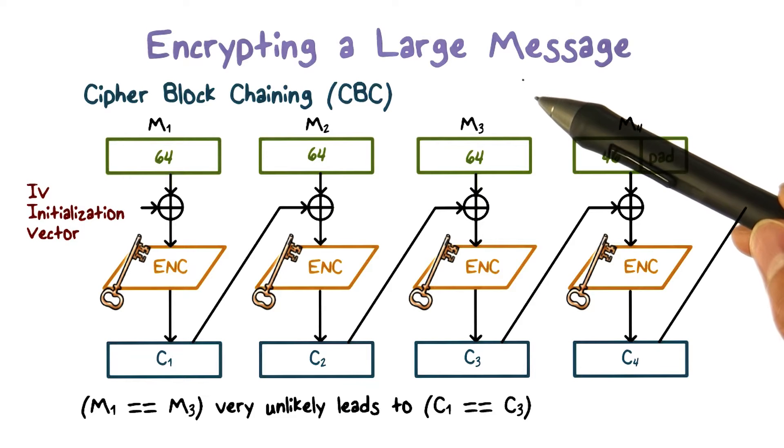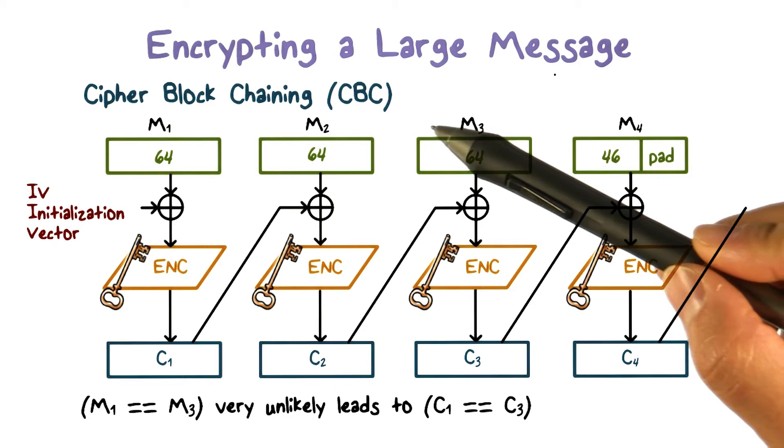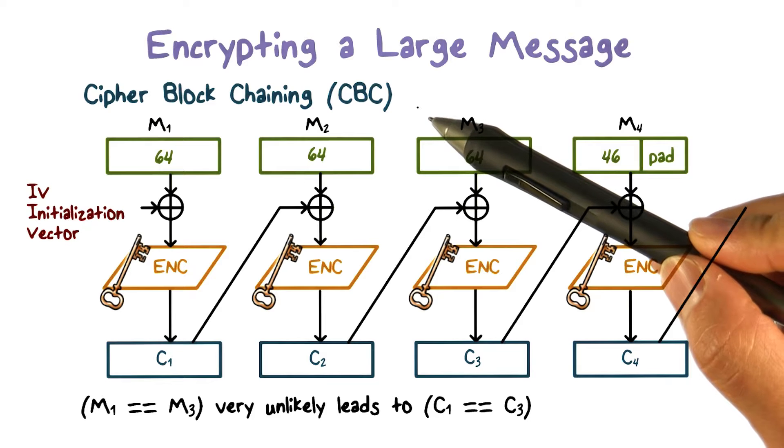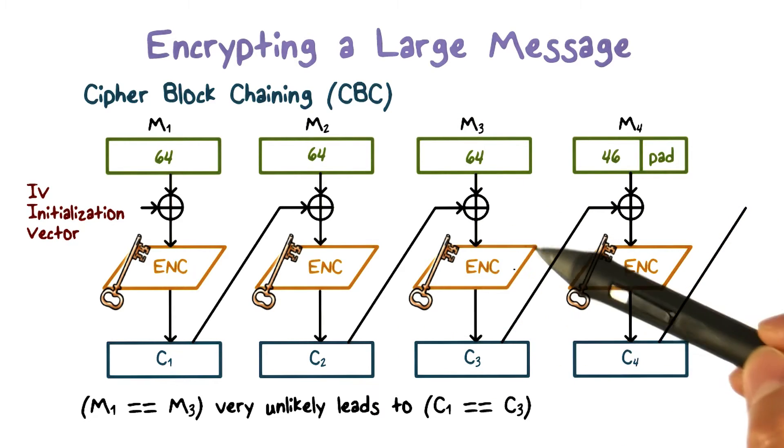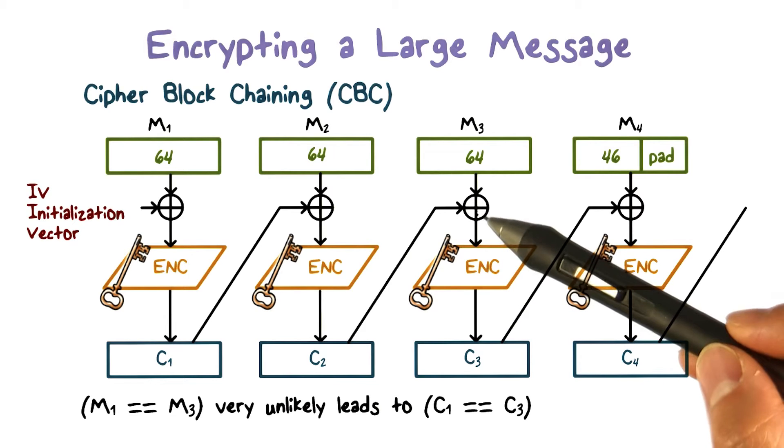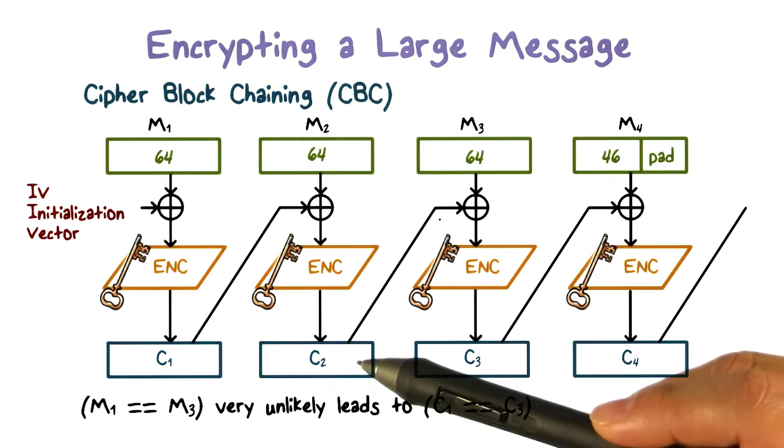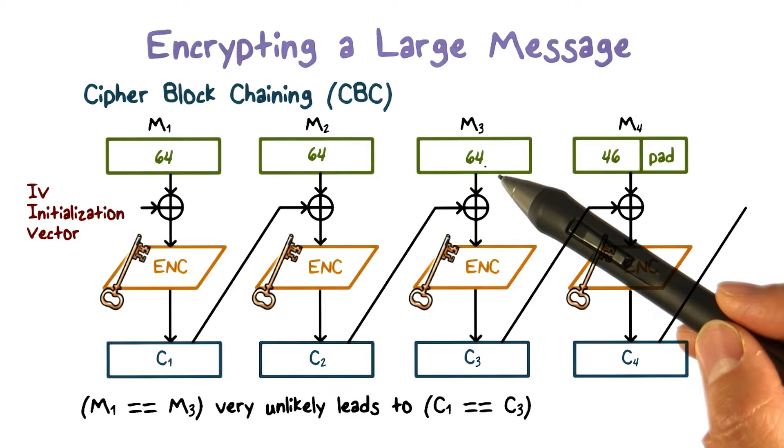The most widely used approach to encrypt a large message is CBC. It stands for cipher block chaining. In CBC, the input to the encryption algorithm is the result of XORing the previous ciphertext block and the current plaintext block.